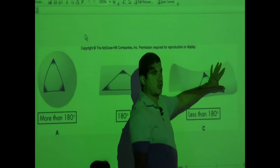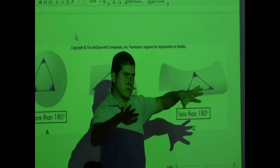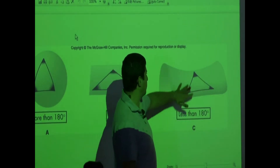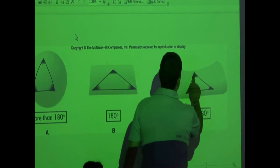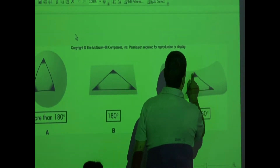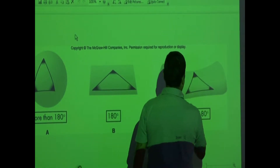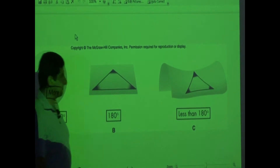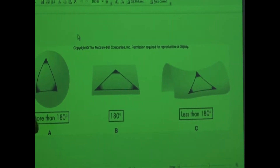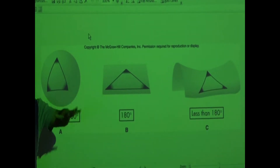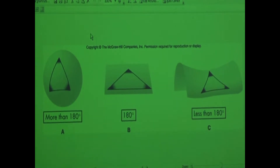The other kind of symmetry is called saddle shape — negative curved space. With this one, if you draw a triangle, the angles of the triangle add less than 180. Think of the saddle that you sit on a horse — that's the negative curved space.